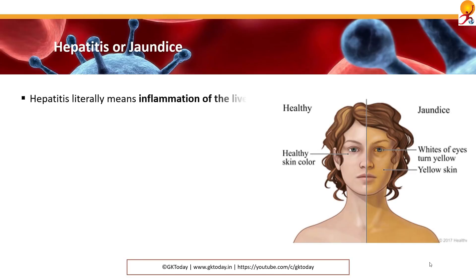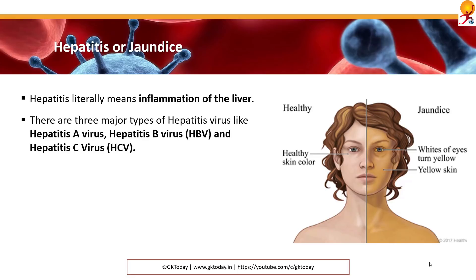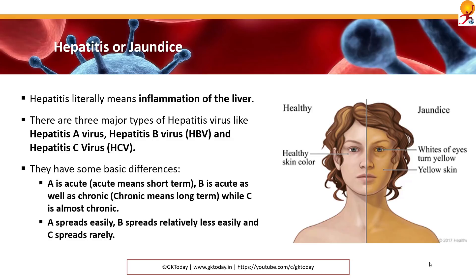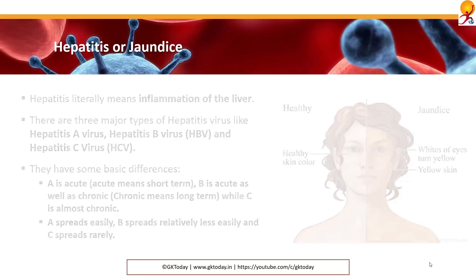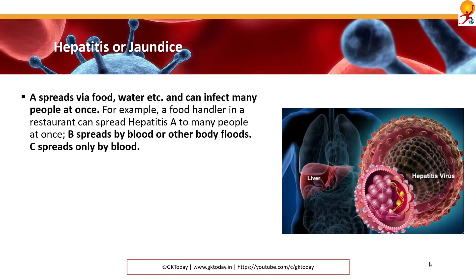Next is hepatitis or jaundice. Hepatitis literally means inflammation of the liver. There are three major types of hepatitis virus: A, B and C. A is acute, meaning short term. B is acute as well as chronic, so it can be short term and long term, while C is almost always chronic. A spreads easily, B spreads relatively less easily, and C spreads rarely. A spreads via food, water, etc., and can infect many people at once.